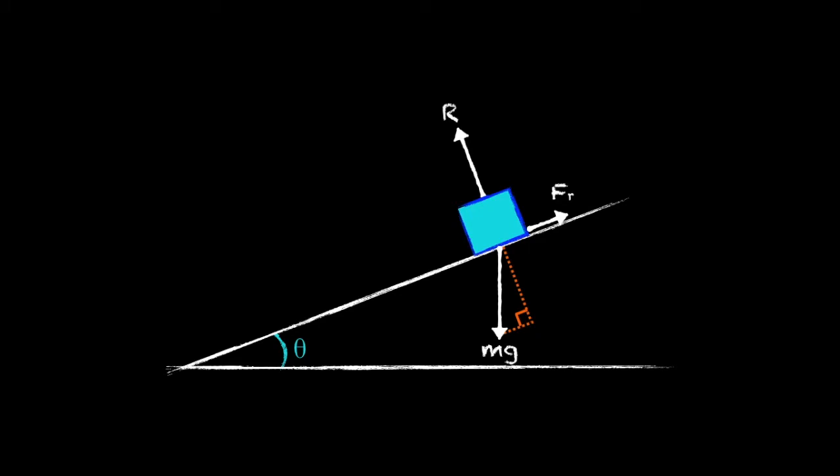Once we have our right-angled triangle with its shorter sides perpendicular and parallel to the slope, then in order to separate weight into those components, we need one of its angles.